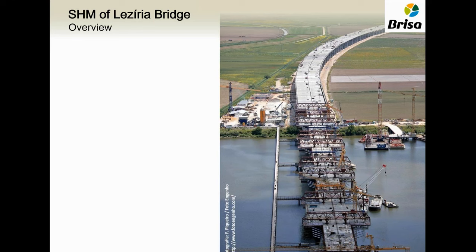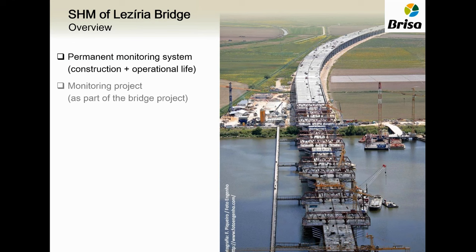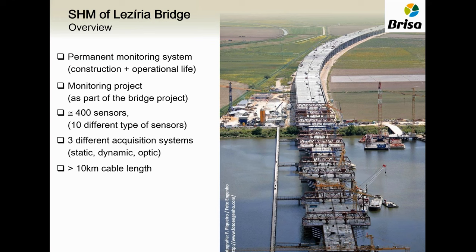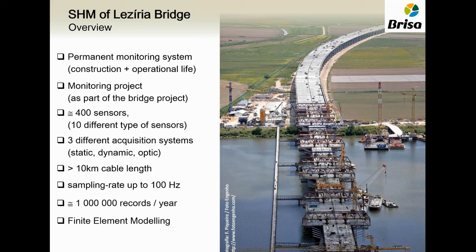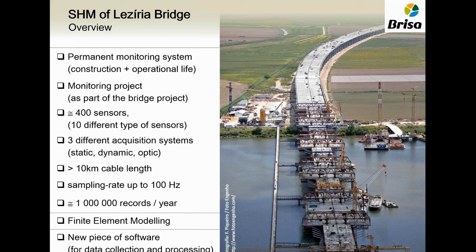So, what about the case study I bring today? This is the Lazio Bridge, as I present in this picture on the right. The main aspects of this bridge: it has a permanent monitoring system installed since construction, and the monitoring project was part of the bridge design, which was novel at the time. It has approximately 400 sensors installed, three different acquisition systems, more than 10 kilometers of cable length, with a sampling rate up to 100 Hz. The database averages 1 million records per year. There is a finite element model developed for this bridge, which is the focus of this presentation, and also a new piece of software to handle all this data.